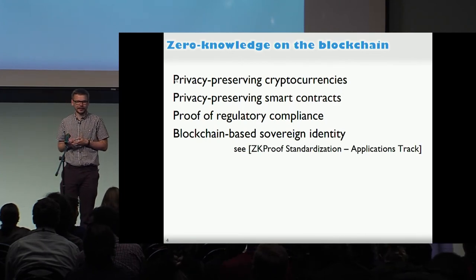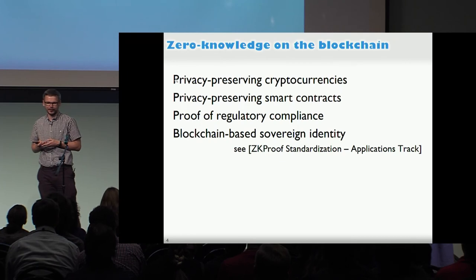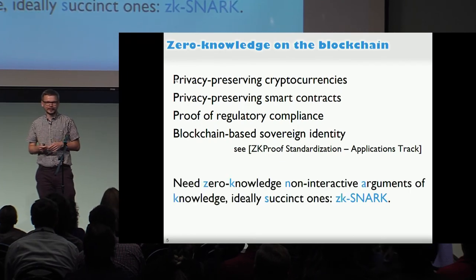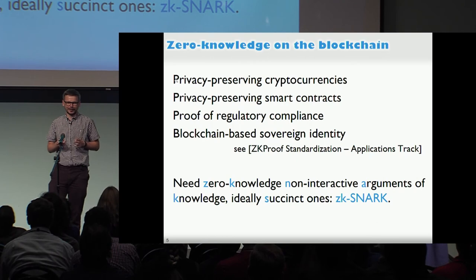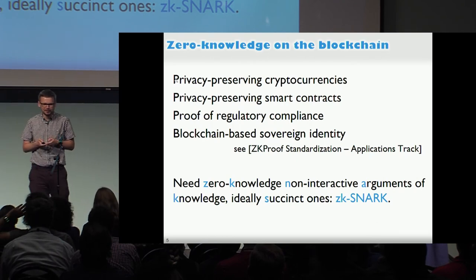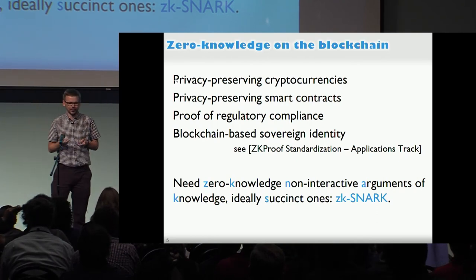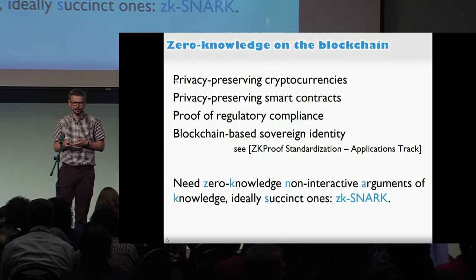Many of these were recently covered in the ZK-proof standardization workshop that Mutu will be talking about. In the blockchain scenario, you need a particular kind of zero-knowledge proof. Ideally, it's a non-interactive proof of knowledge, and especially useful if it's a succinct one - so a ZK-SNARK.